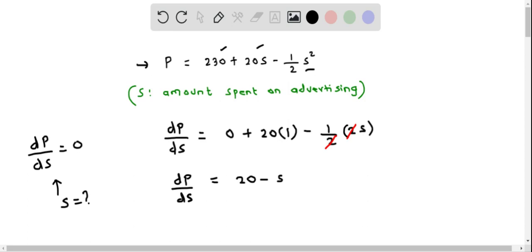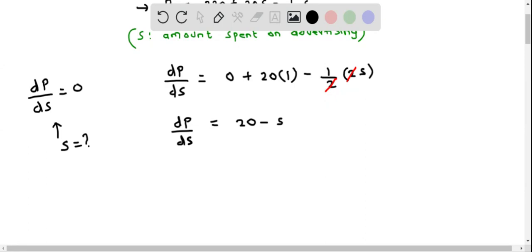Now we need to set dP by dS equal to 0 and solve for S. Doing so, we get 0 equals 20 minus S, which gives S equals 20. So basically, this is the critical point of the profit function.